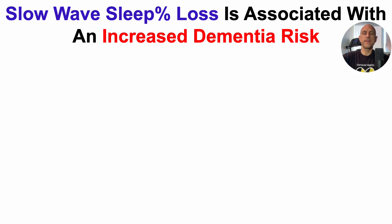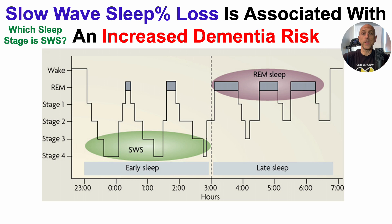In today's video we'll see that slow wave sleep percentage loss over time is associated with an increased dementia risk. But first let's do a quick introduction, including which sleep stage is SWS, or slow wave sleep.